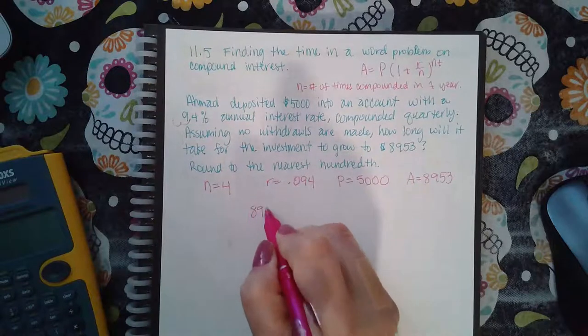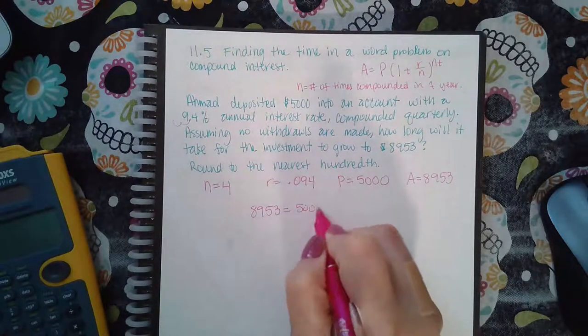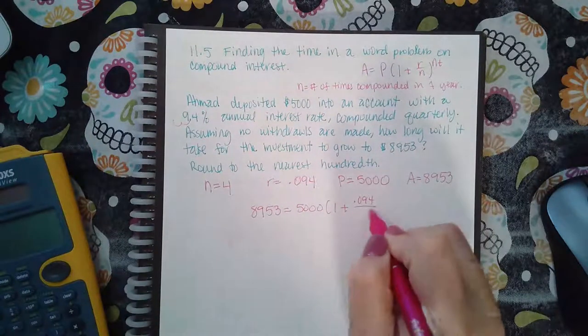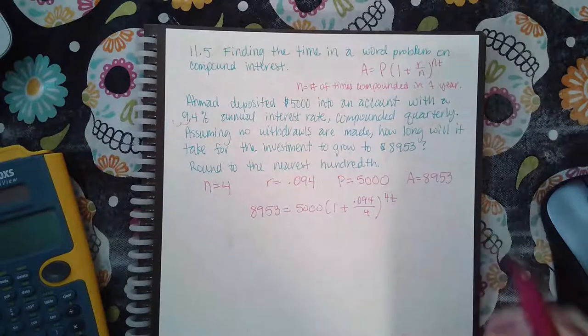8,953 equals 5,000 times 1 plus R over N to the NT.